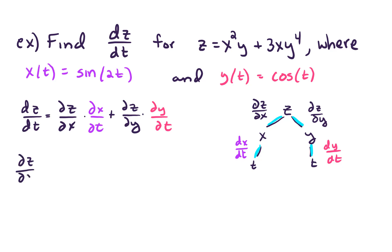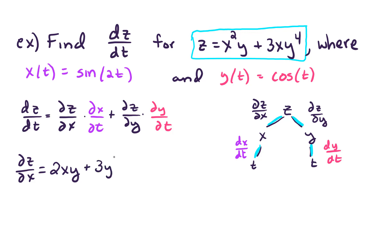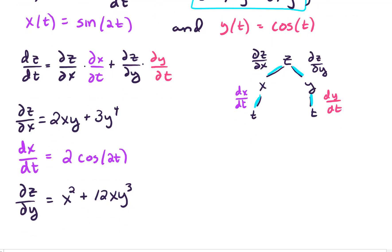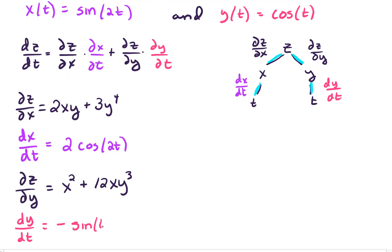First, let's find the partial derivative of z with respect to x. Looking at our original problem, that turns out to be 2xy plus 3y to the fourth. For dx/dt, the derivative of x with respect to t — that's going to be 2cos(2t) by the chain rule from single-variable calculus. Continuing on, the partial derivative of z with respect to y turns out to be x squared plus 12xy cubed. And the last piece we need is dy/dt, which will be negative sine t.